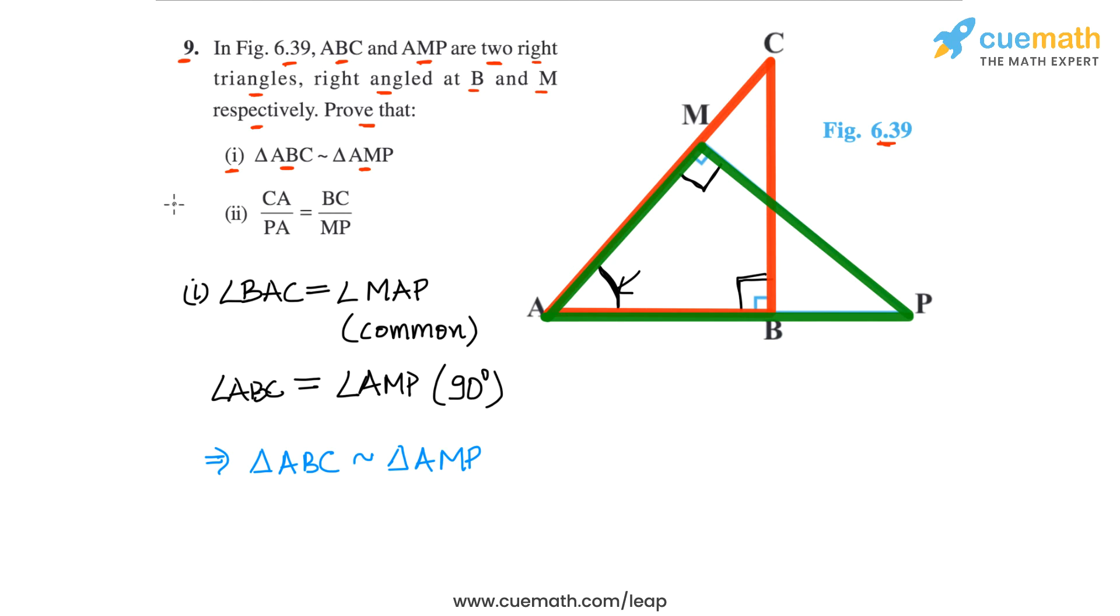Now, in part 2, we have to prove that CA by PA is equal to BC by MP. This part simply says that two pairs of sides of triangle ABC and triangle AMP are proportional. This follows automatically from the first part, because we have proven that ABC is similar to AMP, so their sides definitely have to be in proportion.